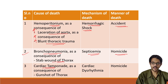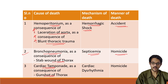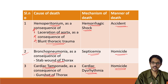Next example is cardiac tamponade — compression of the heart by fluid accumulation — which was a consequence of a gunshot wound. A gunshot wound of the thorax led to hemorrhage which compressed the heart. The physiological damage here is cardiac dysrhythmia: because of compression of the heart, the heart rhythm was lost and the person died. The manner of death is homicide because someone inflicted the gunshot wound.